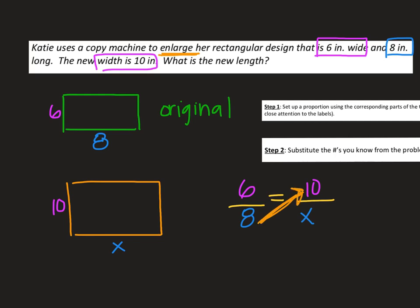8 times 10. 8 times 10 is 80. And then when you're done, you need to divide by 6. So 80 divided by 6. That is going to be 13.3 repeating. And I know that's kind of small. So I'm going to come back over here next to my shape and I'm going to write it down. The missing length is 13.3 repeating inches long.